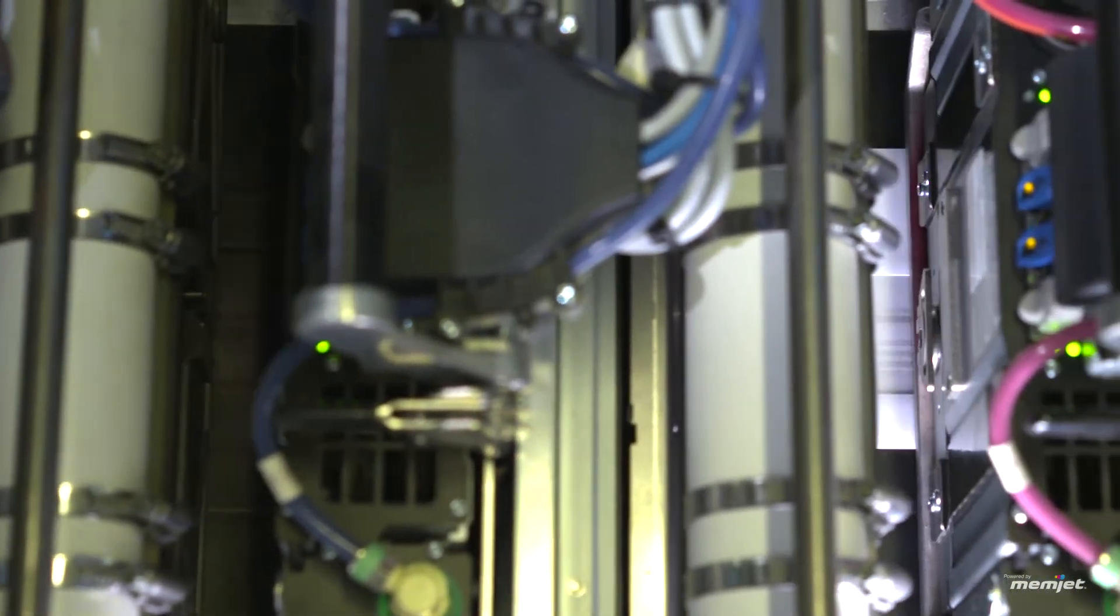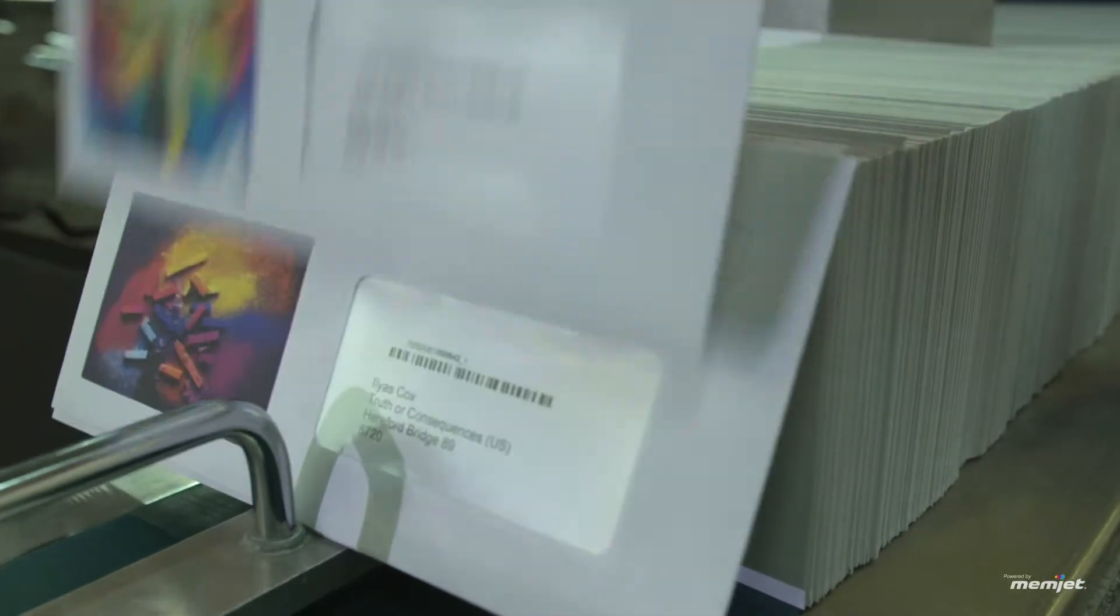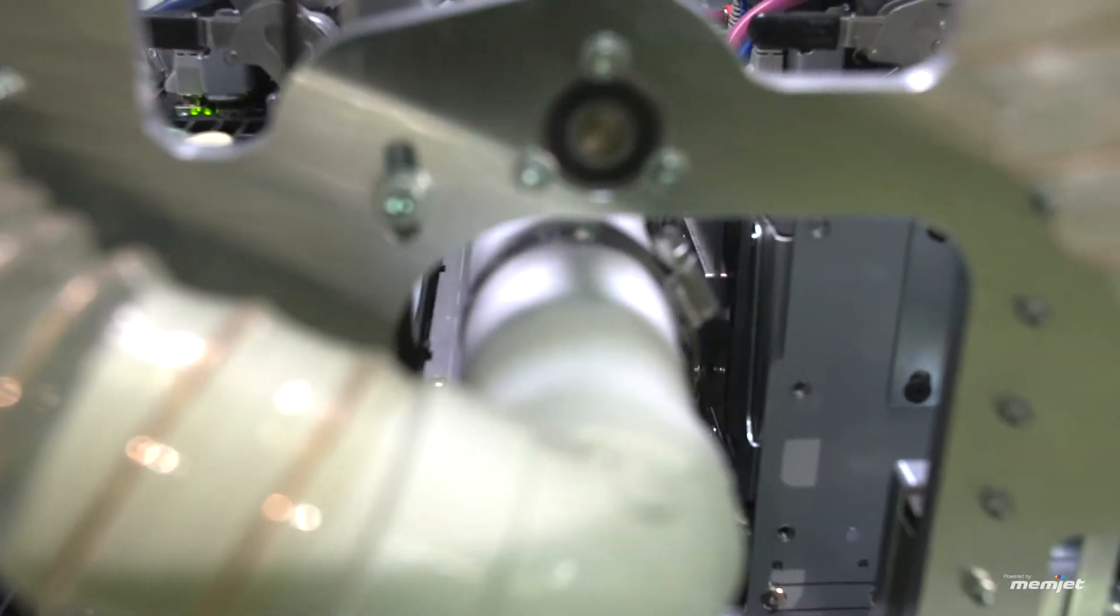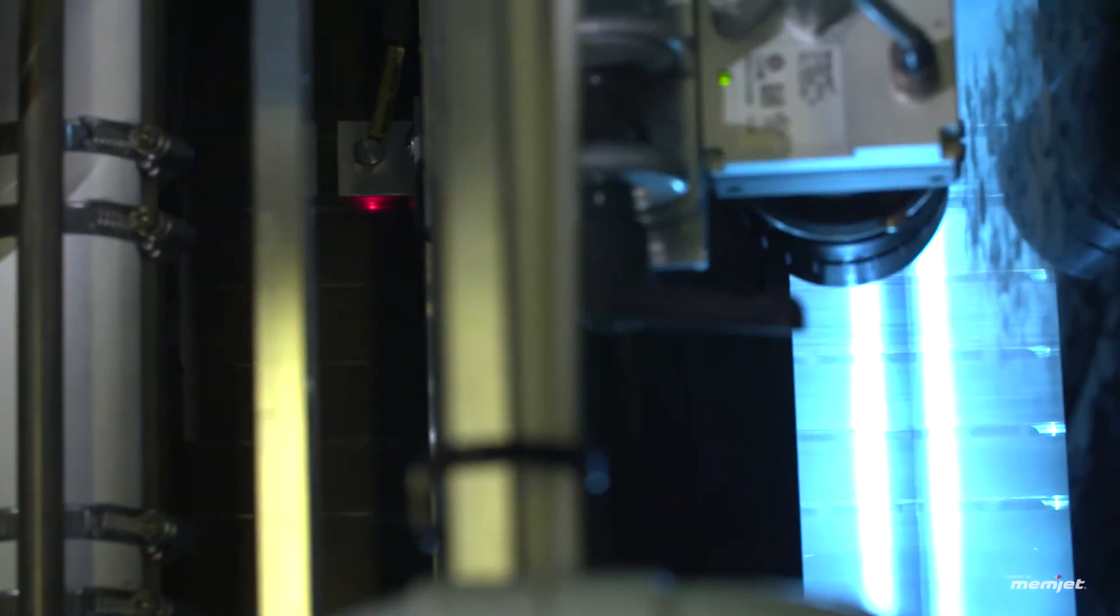In the print module it actually does the full color CMYK printing at 1600 dpi resolution in offset-like quality. The print module also has an inline vision system for verifying and validating the envelopes. It makes sure that the adequate graphics went on the very envelope.